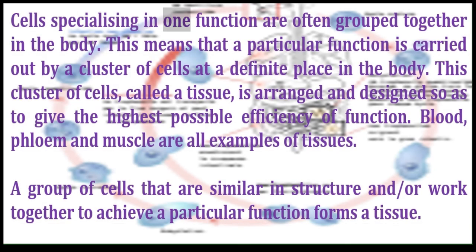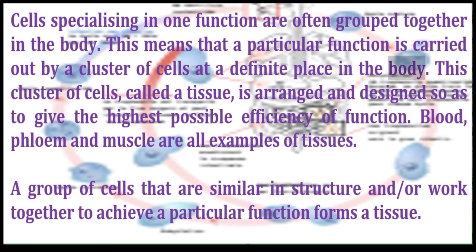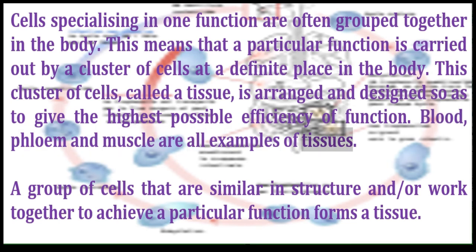Cells specializing in one function are often grouped together in the body. This means that a particular function is carried out by a cluster of cells at a definite place in the body. This cluster of cells, called a tissue, is arranged and designed so as to give the highest possible efficiency of function. Blood, phloem and muscle are all examples of tissues. A group of cells that are similar in structure and or work together to achieve a particular function forms a tissue.